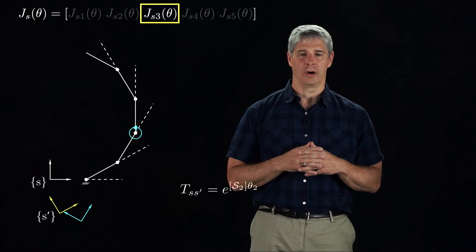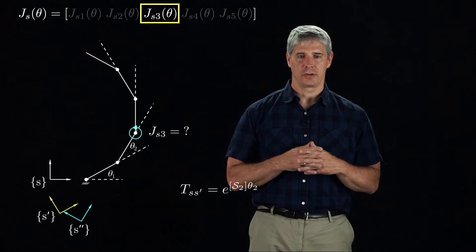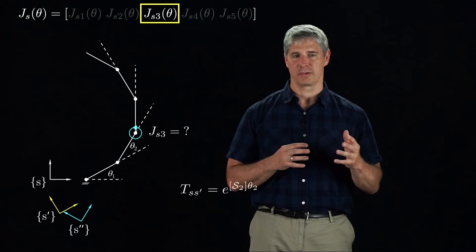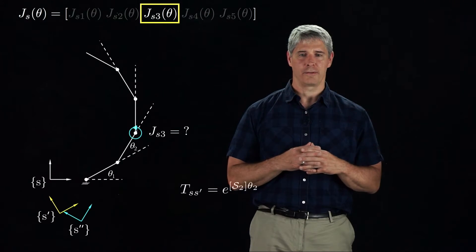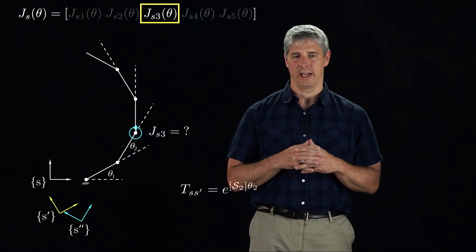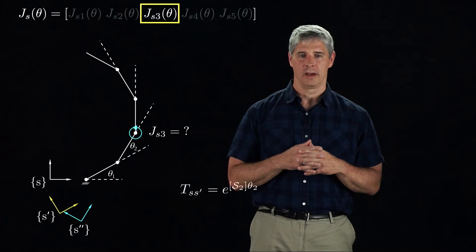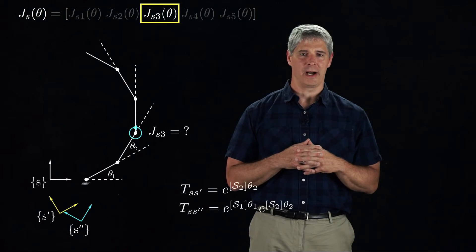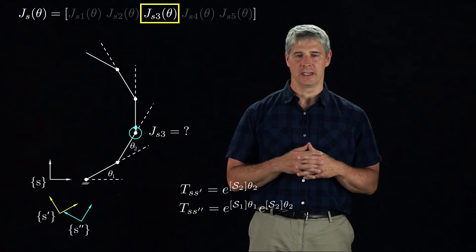Now we rotate joint 1 by theta 1. Again, joint 3 moves relative to the S-frame, so Js3 changes. We draw a new frame, S-double-prime, where the relationship between joint 3 and S-double-prime is the same as the relationship between joint 3 and S when the robot is at its zero configuration. The frame S-double-prime is obtained from S-prime by rotating it about the joint 1 axis by an angle theta 1. Because the joint 1 axis is represented by the spatial screw axis S1, performing the transformation in the space frame corresponds to multiplying T_SS' by e to the bracket S1, theta 1 on the left, yielding this expression for the S-double-prime frame in the S-frame.